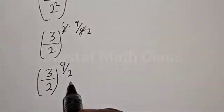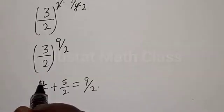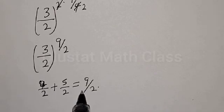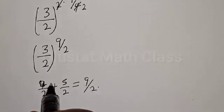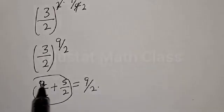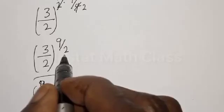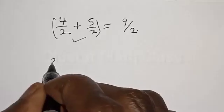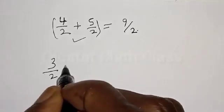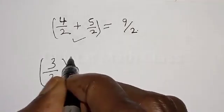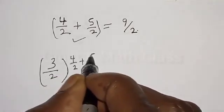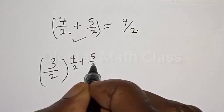The exponent 9 over 2 can be written as 4 divided by 2 plus 5 divided by 2, which equals 9 over 2. Let's substitute this into the equation. We have 3 divided by 2, raised to the power 4 over 2 plus 5 over 2.